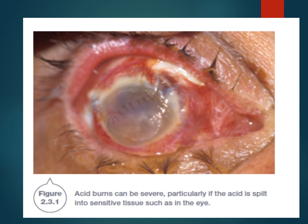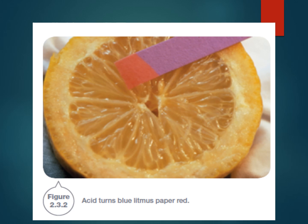Acids can cause some really nasty injuries — this is an example of an acid burn of someone's eye. Here's an orange, which contains citric acid. When you put blue litmus paper — a purplish-blue litmus paper — on it, you can see that the part touching the orange has turned red.